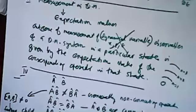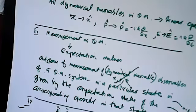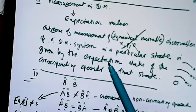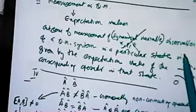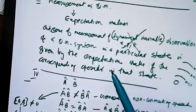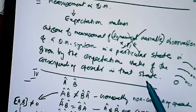The second postulate was about the operator. The dynamical variables are represented by operators in quantum mechanics. This leads us to measurement — about expectation values or eigenvalues. Normally we have to measure the dynamical variable, or we call it the observable, when the system is in a particular state. The measured value is given by the expectation value of the operator. The expectation value is something we have already learned.